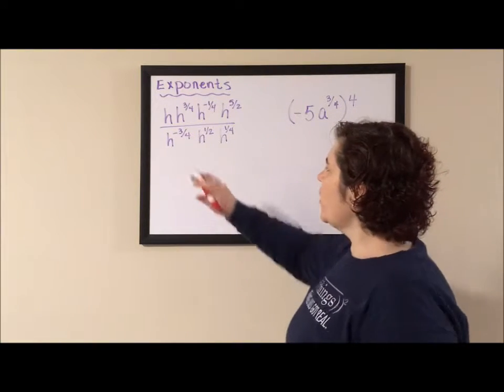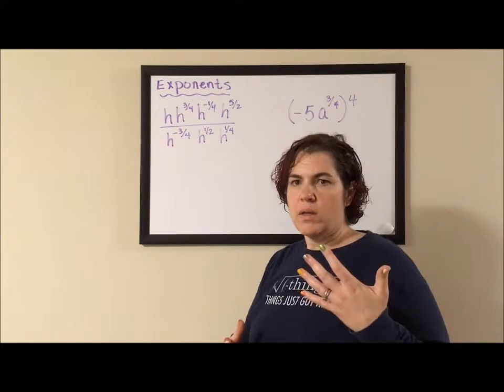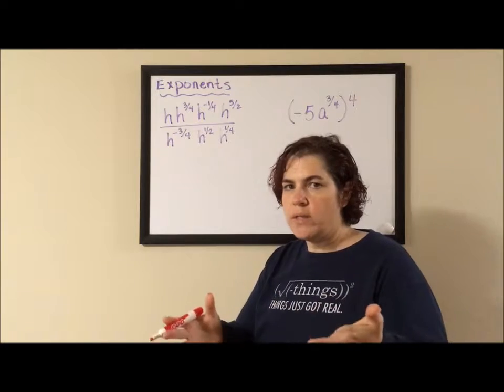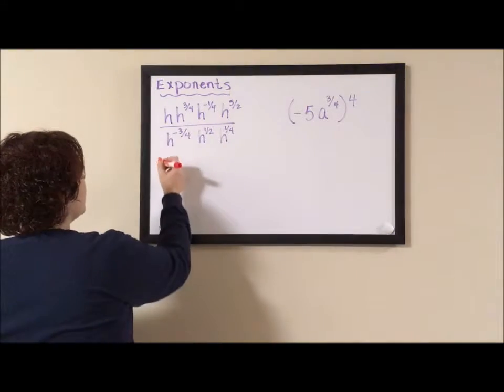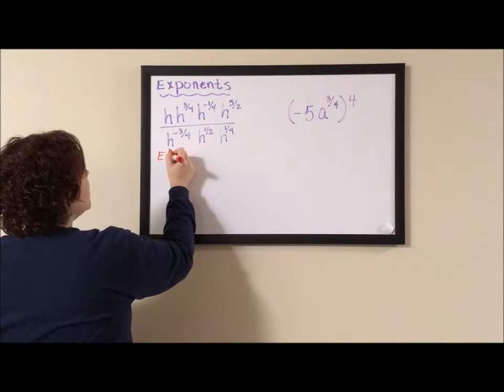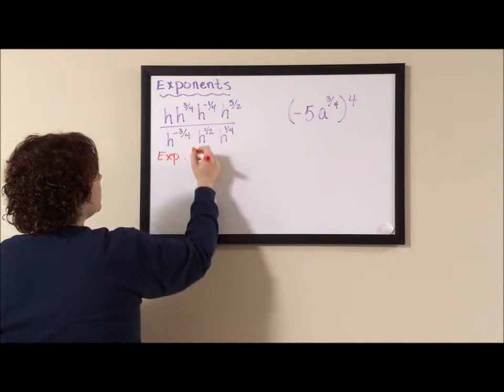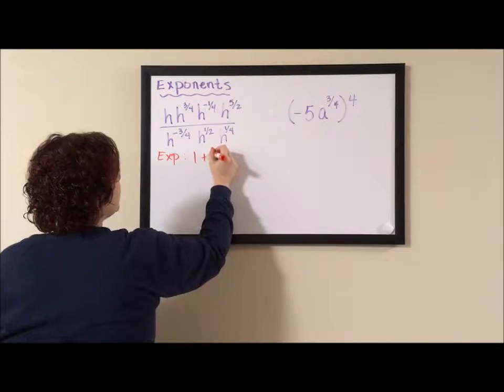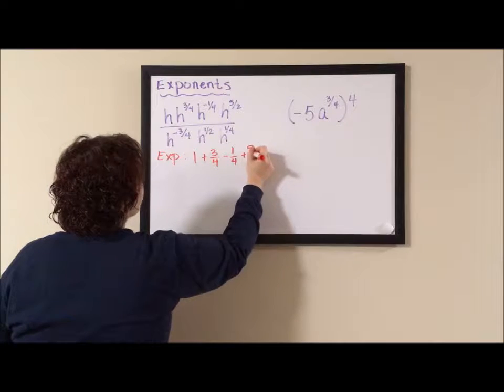So when you have four H's that are all multiplied together with exponents, you just add your exponents. Now I'm going to pull the exponents out so I can have a little bit more room. I have one plus three fourths minus one fourth plus five halves.